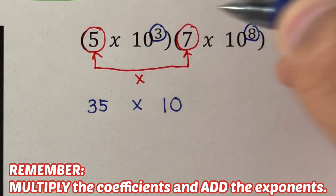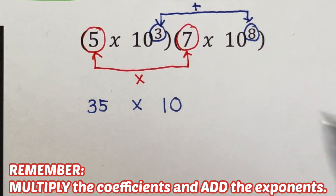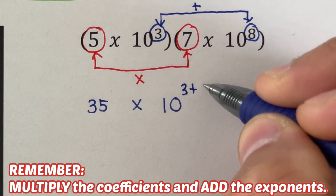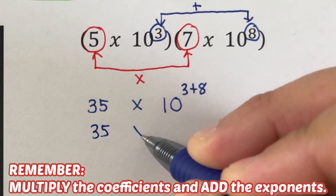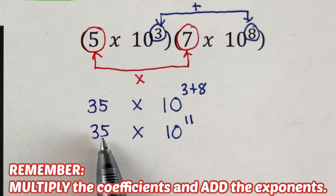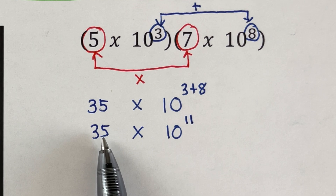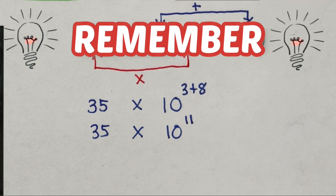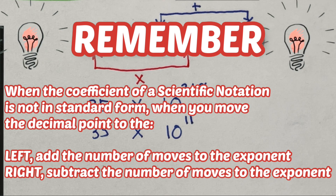3 and 8 shall be added together: 3 plus 8 is 11, so we rewrite this as 35 times 10 to the power 11. Notice that the coefficient 35 is bigger than 9.9999, so this is not in standard form. When the coefficient is not in standard form: move the decimal point to the left and add the number of moves to the exponent; move it to the right and subtract.